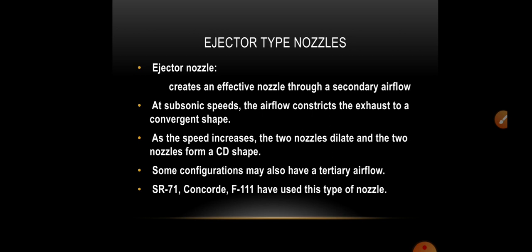Ejector type nozzles create an effective nozzle through secondary airflow. At subsonic speeds, the airflow constricts the exhaust to a convergent shape. As speed increases, the two nozzles dilate and form a convergent-divergent shape. Some configurations may also have tertiary airflow, which is a third flow apart from primary and secondary.